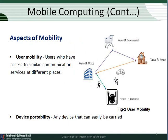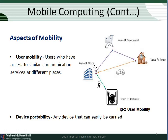There are two aspects of mobility: user mobility and device mobility. User mobility means a user who has access to similar communication services at different places — the user can access any information from anywhere, at any time. For example, a user sitting at home can access information related to a supermarket, office, or any other location.